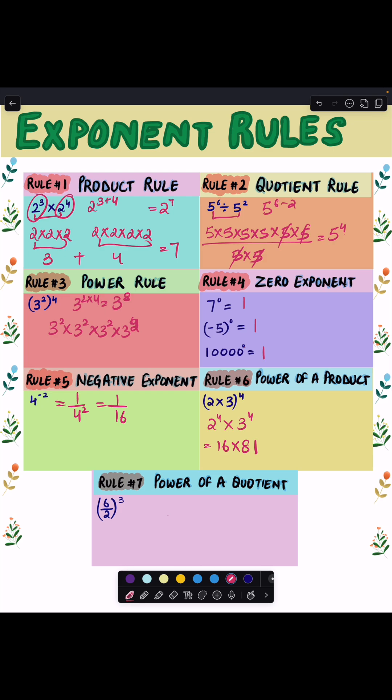Next rule is the power of a quotient rule, which says when a power is applied to division, give that power to both the numerator and denominator. So in this case, it will become 6 raised to power 3 and 2 raised to power 3, which will give us 216 in the numerator and 8 in the denominator.